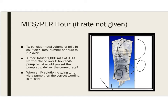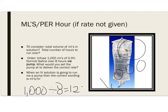Then we consider how long it is to run. So if you had an order from a physician that said infuse 1,000 mLs over 8 hours, what would you set the pump at to deliver the correct amount? This is simple — you're just taking 1,000 and dividing it by the hours, getting 125. Remember, it's running on a pump, so the correct term is mLs per hour.